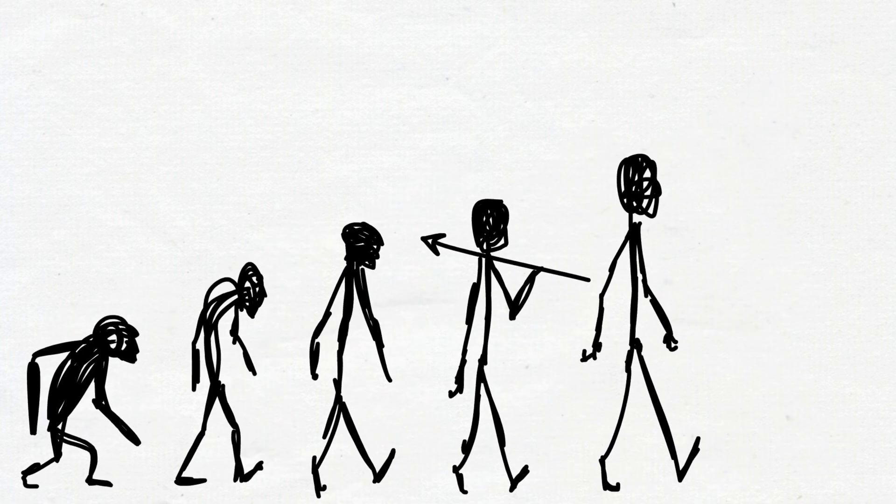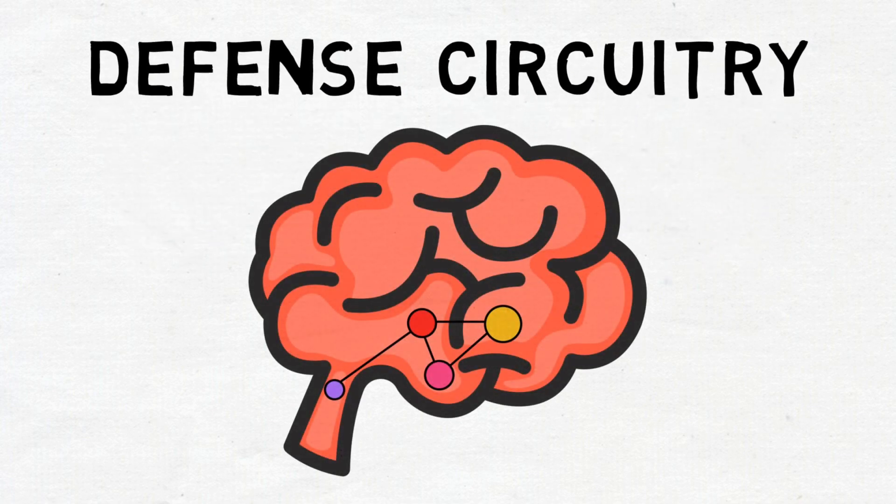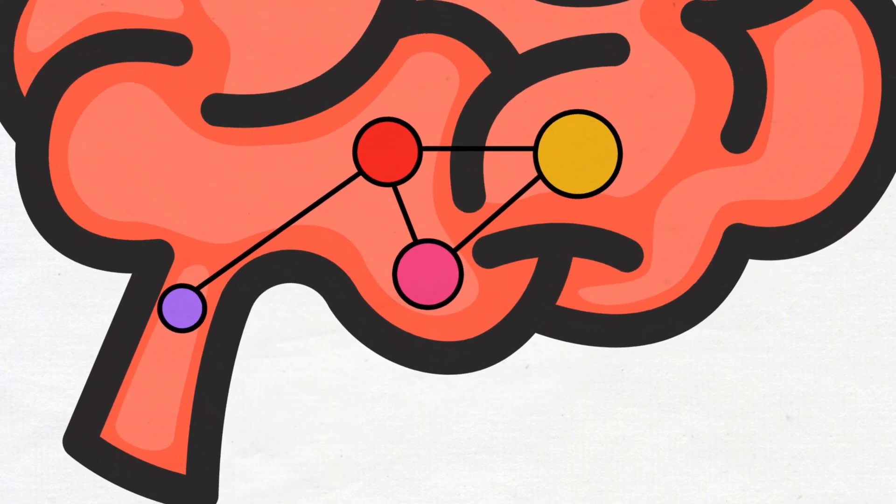Thanks to evolution, all of our brains have what neuroscientists call a defense circuitry. Circuitry just means a collection of brain areas that work together to perform certain functions.